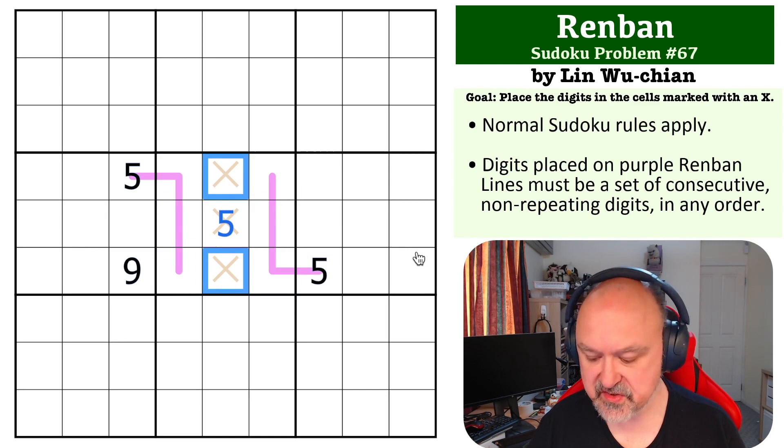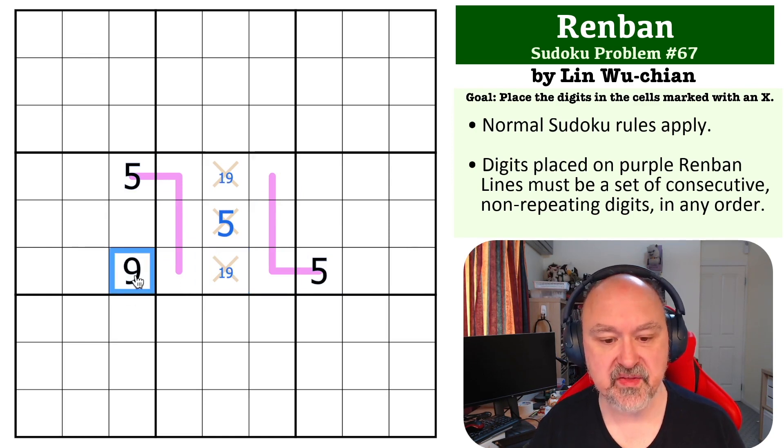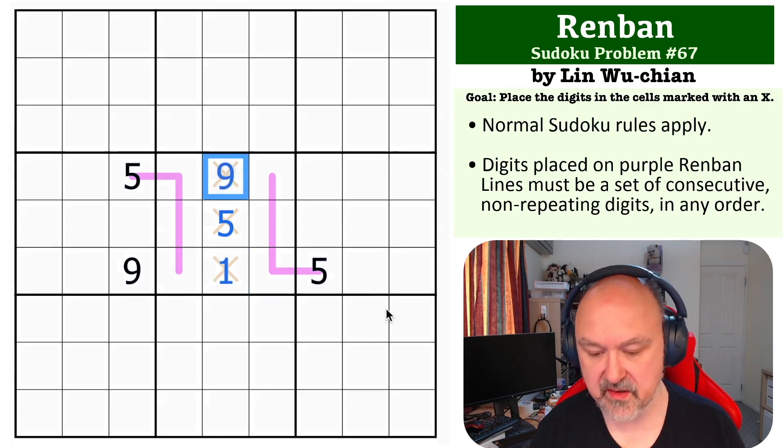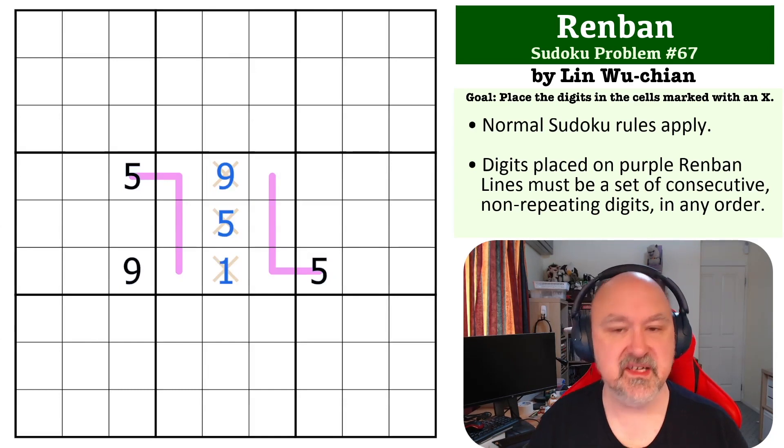...on either of these lines. So this becomes a 1-9 pair, but this 9 tells us that this is the 1 and this is the 9. So quite an easy little problem today, hopefully no one struggled too much with this one.